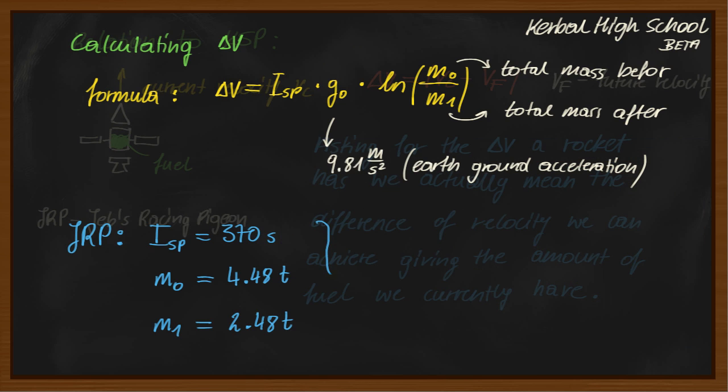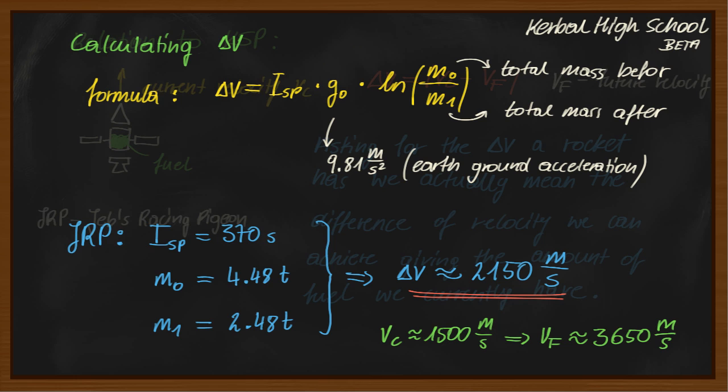Throwing these values into our equation, we get a delta v of approximately 2150 meters per second. If we now assume our rocket to have a current speed of let's say 1500 meters per second, we can accelerate our craft up to 3650 meters per second.